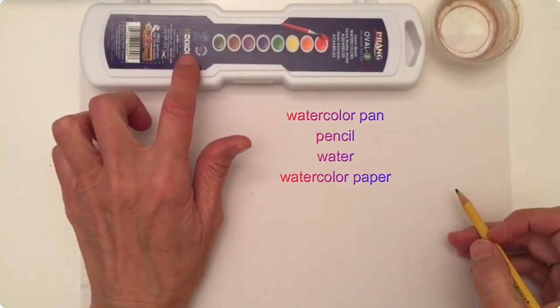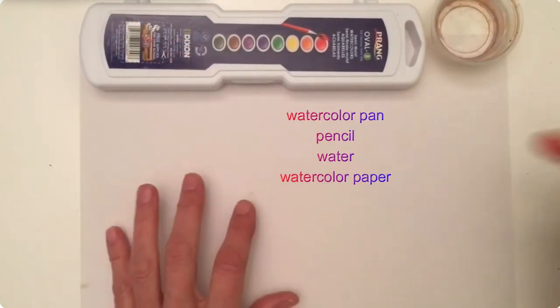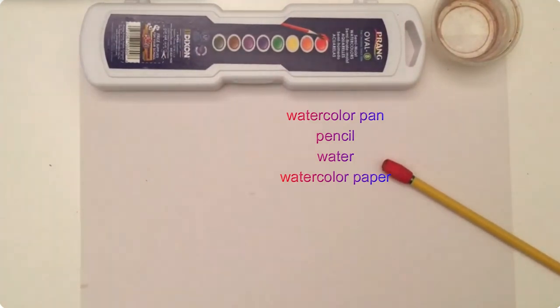Today you're going to need your watercolor pan, a pencil, a dish of water, and a sheet of watercolor paper.